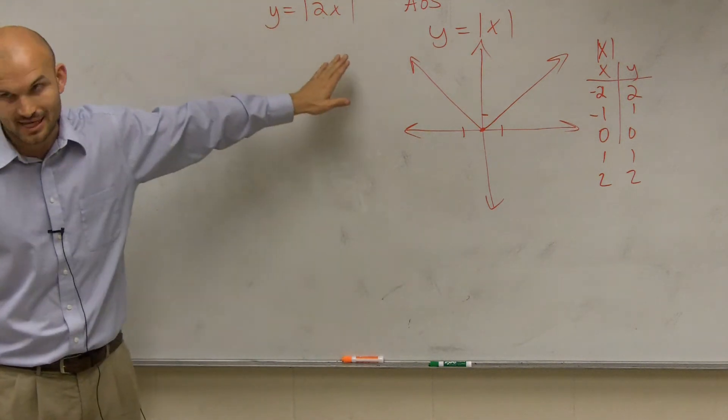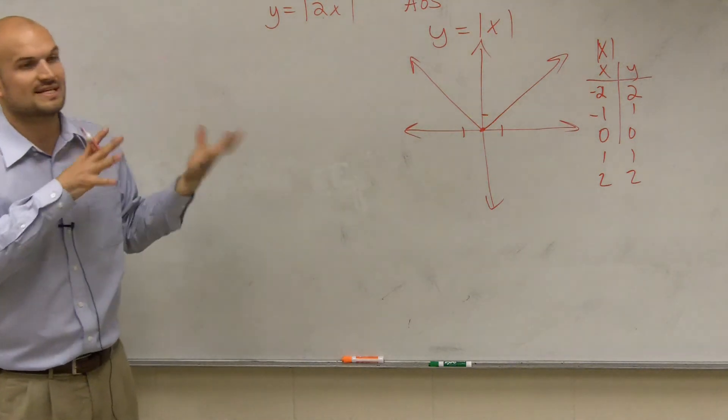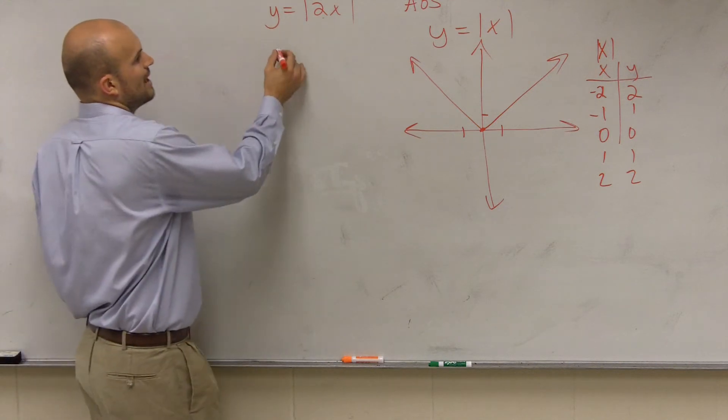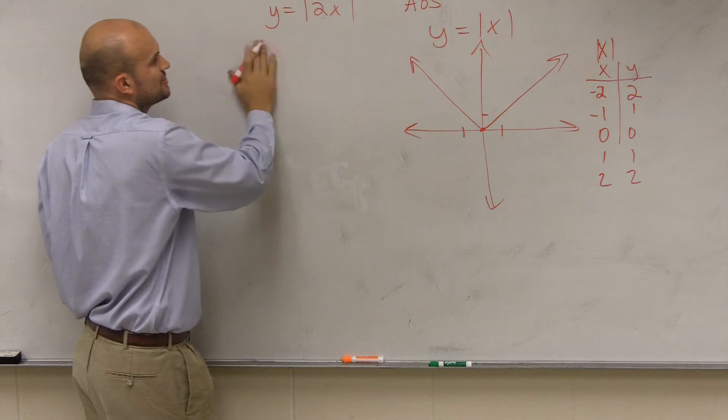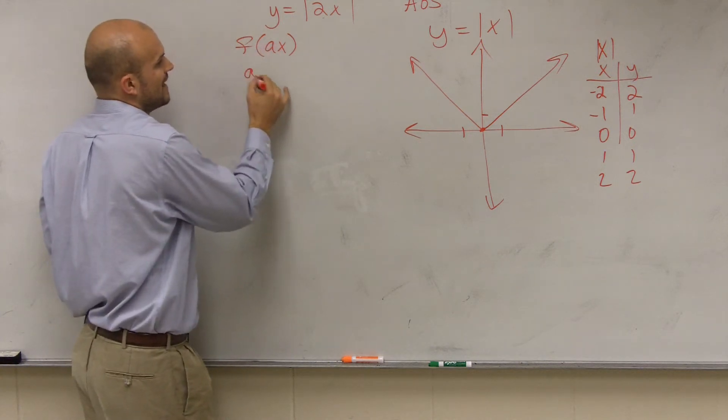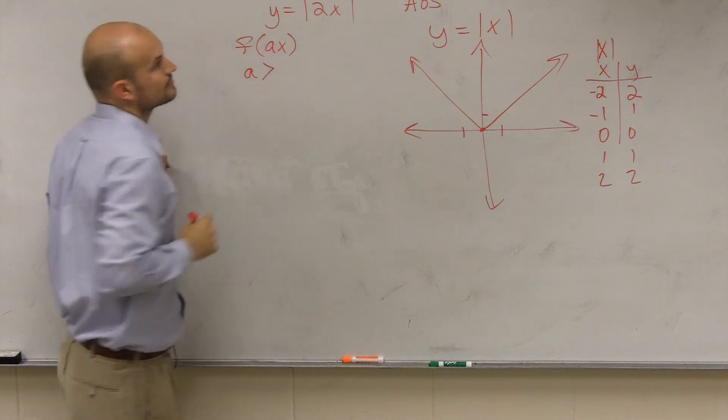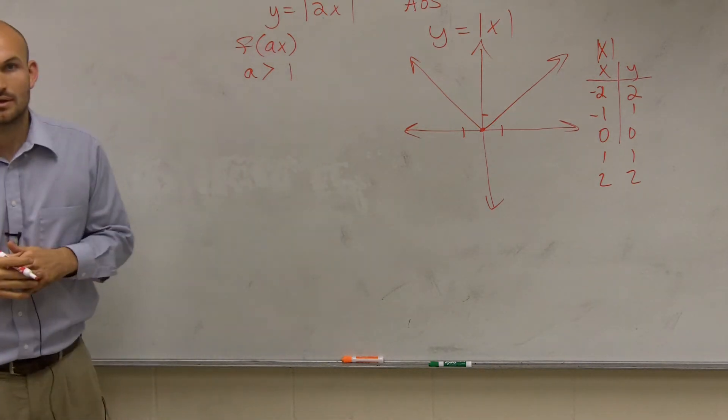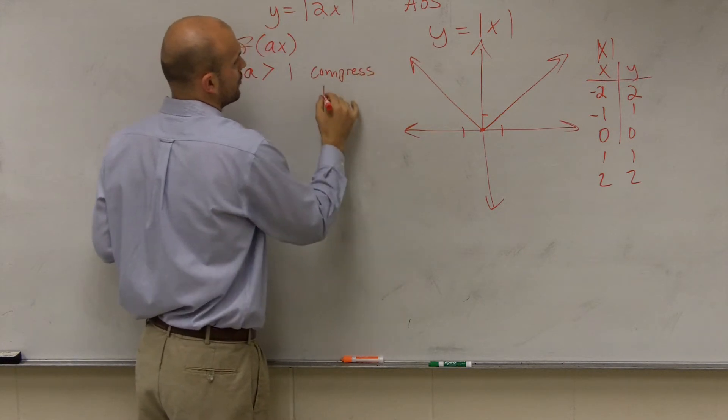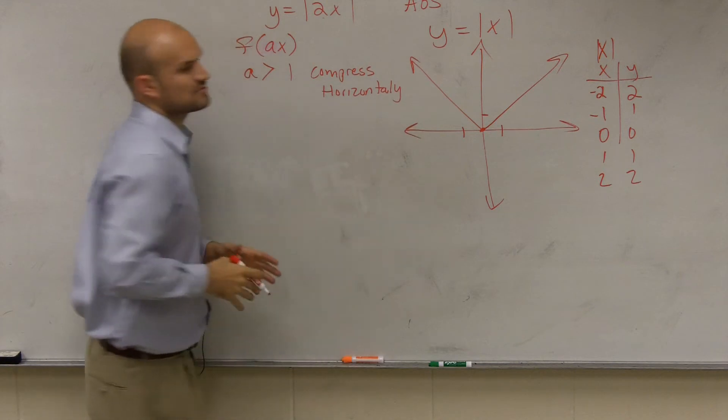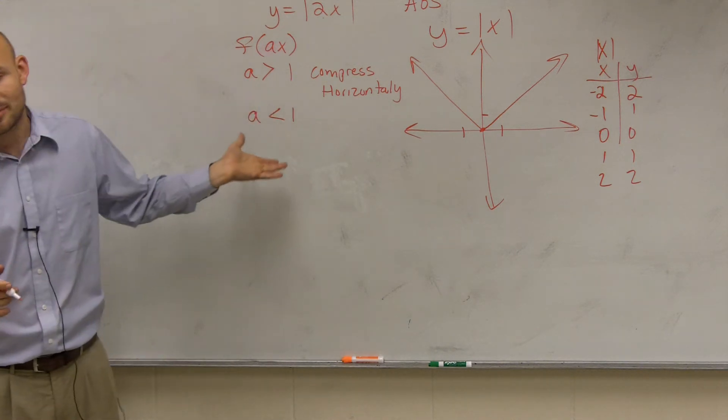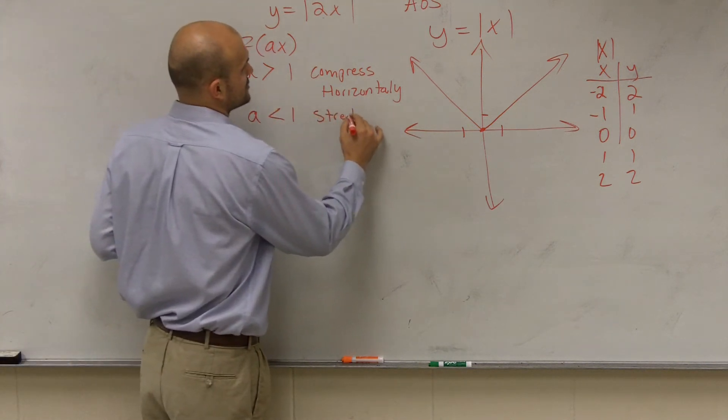The only thing left to happen is we look at our dilation. We can talk about dilations if it's inside or outside the function. When you have a, whereas a is going to be inside your function, so you have f of a of x, where a is a number that's multiplied by there. If a is greater than 1, what it's going to do is it's going to compress your graph horizontally, or sometimes what we like to say is compress it or maybe stretch it vertically. If a is less than 1, it obviously has to be greater than 0. If a is less than 1, then it's going to stretch your graph horizontally.